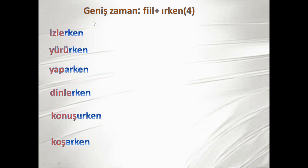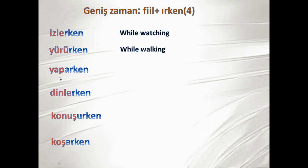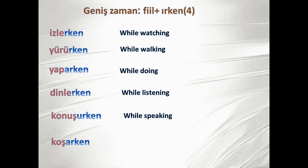Let's go through the examples. The first category: verb plus -ırken. The verb takes a vowel that follows vowel harmony, and we don't need to add anything extra. So we have: izlerken — while watching, yürürken — while walking, yaparken — while doing, dinlerken — while listening, konuşurken — while speaking, koşarken — while running.